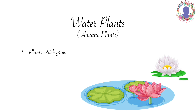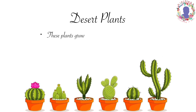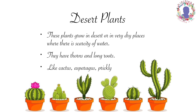Plants which grow in water are called water plants or aquatic plants, like lotus, water lily, water hyacinth, etc. Desert plants grow in desert or in very dry places where there is scarcity of water. They have thorns and long roots. Cactus, asparagus, prickly pear are some examples of desert plants.